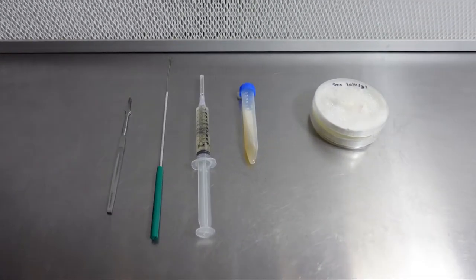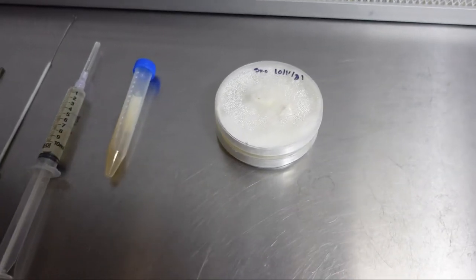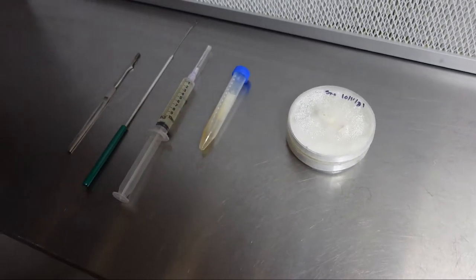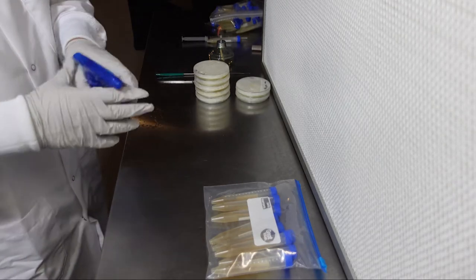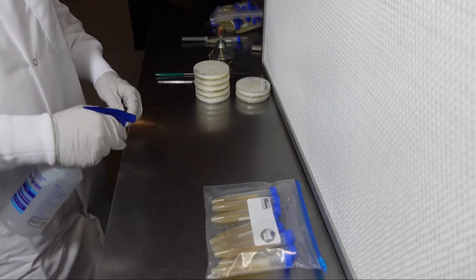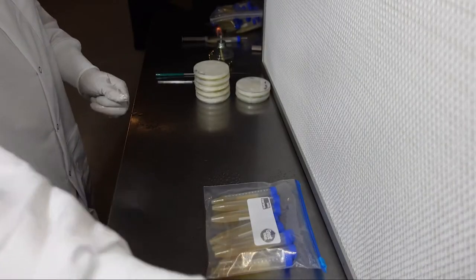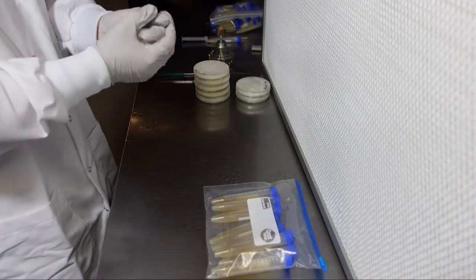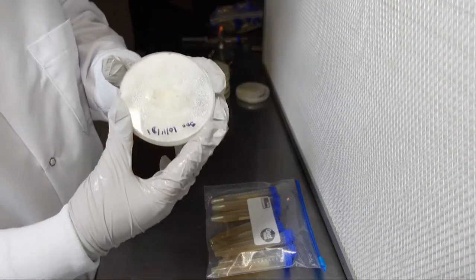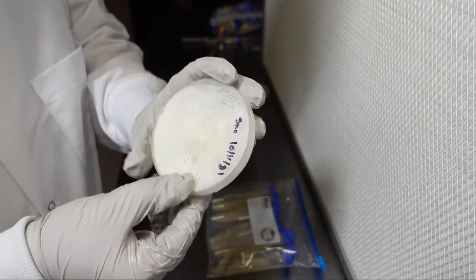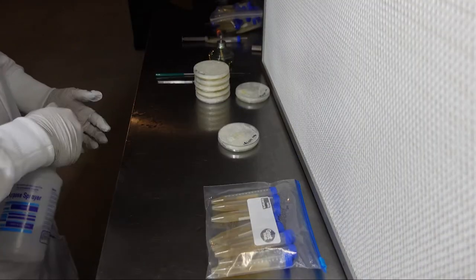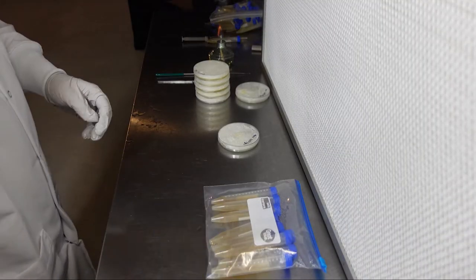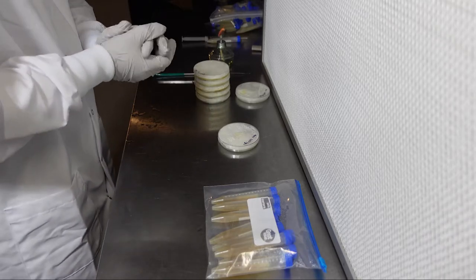Now I'll demonstrate how to inoculate your agar slants with liquid culture and with plate cultures using an inoculation loop and using a scalpel. For these transfers you'll need to be working in a sterile environment. Here I'm working in front of a laminar flow hood but you can optionally use a still air box. Before you start, spray everything down with isopropyl alcohol to sterilize it.